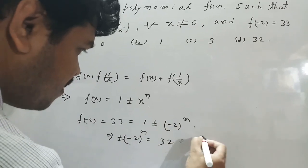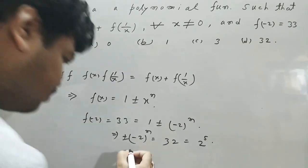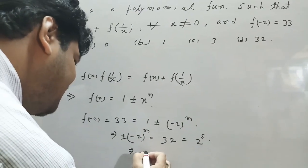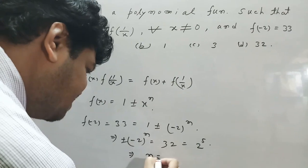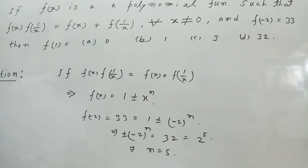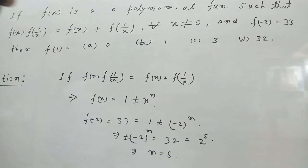f(-2) equal to 33 equal to 1 plus minus (-2) whole power n. That is 2 to the power 5.